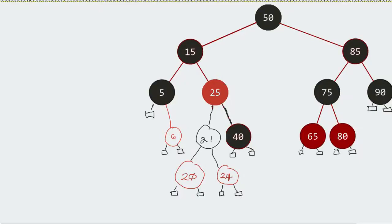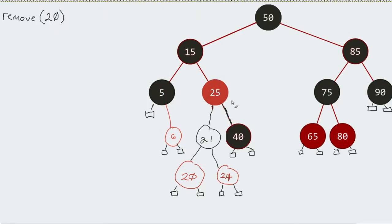Now, the removal process of a red-black tree can get a little funky, so we'll start off with at least a rather simplistic one. Let's say, for example, I came in with a remove 20. Well, we would traverse our tree, and we see that we happen to have this 20.